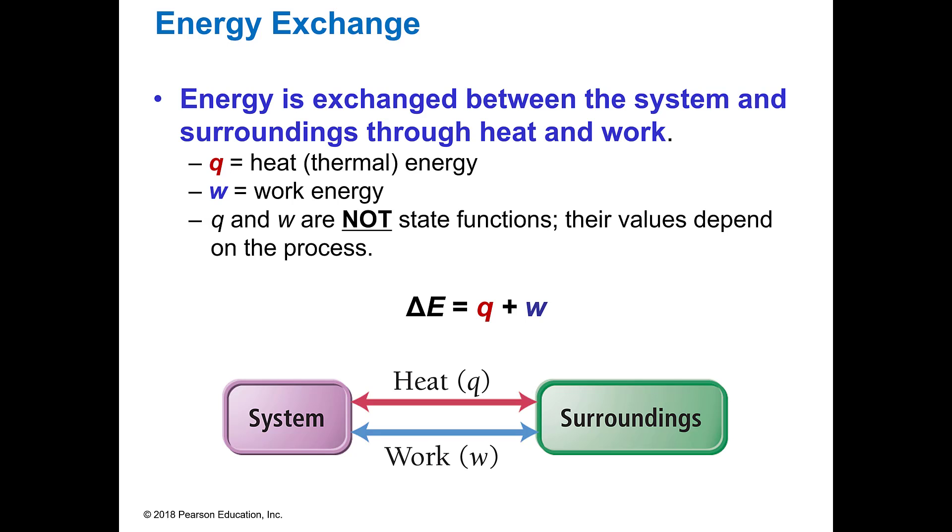So energy is exchanged between system and the surroundings through heat and work. So we've been talking about joules, which is work. And then we can also use Q, which is heat, which we can also use joules to manipulate those as well. So the change in energy is equal to the Q, the thermal energy, and the work. And so those are exchanging back and forth, and so that's why we work on the net difference, like we did in that little exchange problem I showed you earlier.